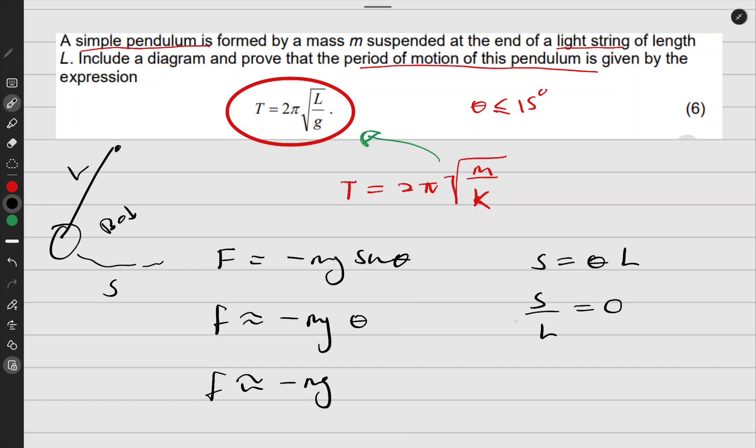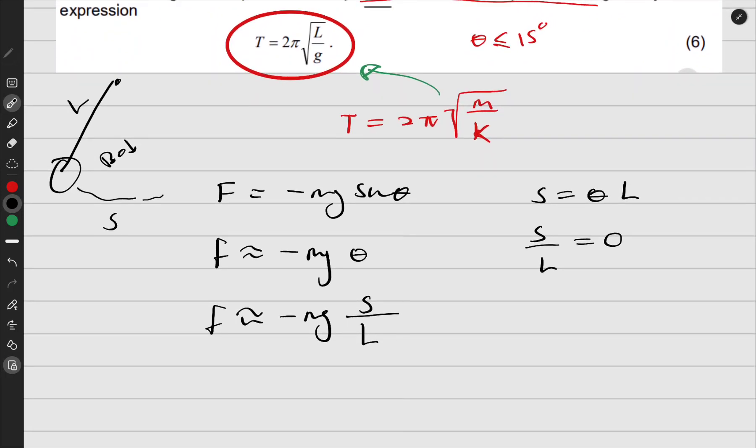For theta you're going to put s for arc length all over length. Here, s is displacement.